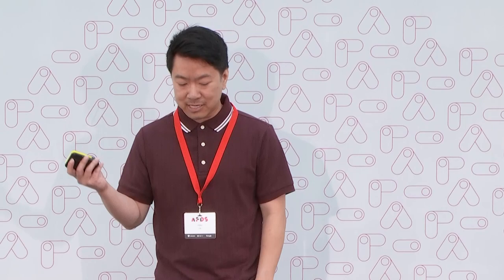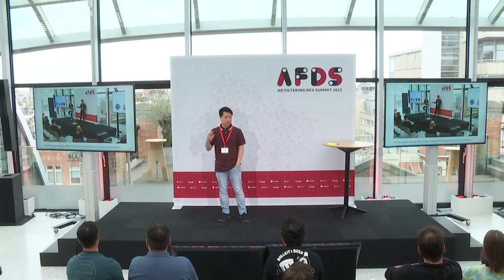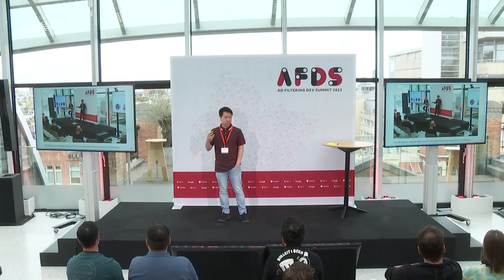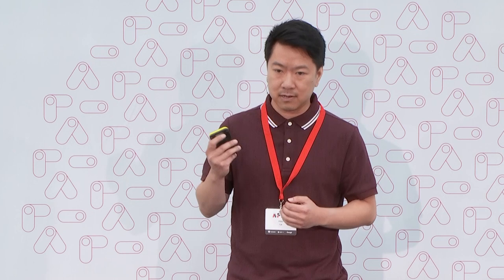Last year I introduced a reinforcement learning framework called AutoFR to automate the process of filter rule generation. By design, it takes a site and then optimizes rules only for that site. Today I'm going to extend that work and outline approaches to generating rules that can be applied across multiple sites. First, let me provide an overview of the problem space and of AutoFR.